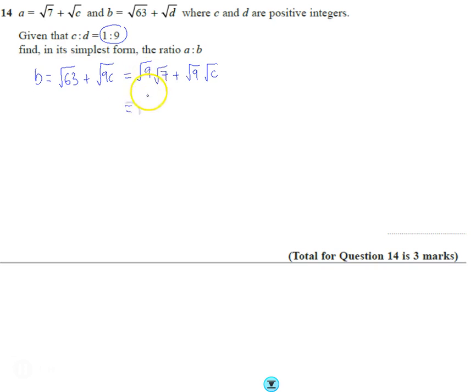Well, square root of nine is actually three, so that makes three root seven plus three root C. And if you spot now, this looks kind of similar to this up here, except everything has been multiplied by three.